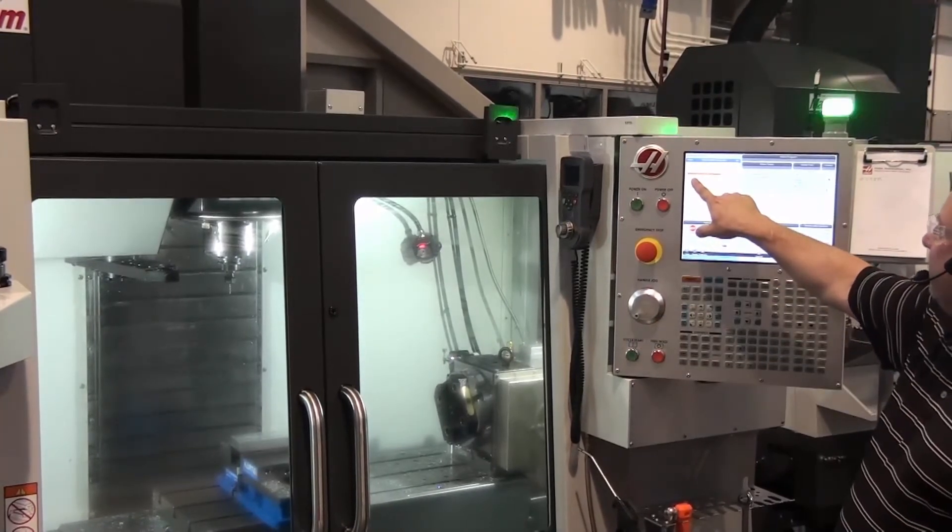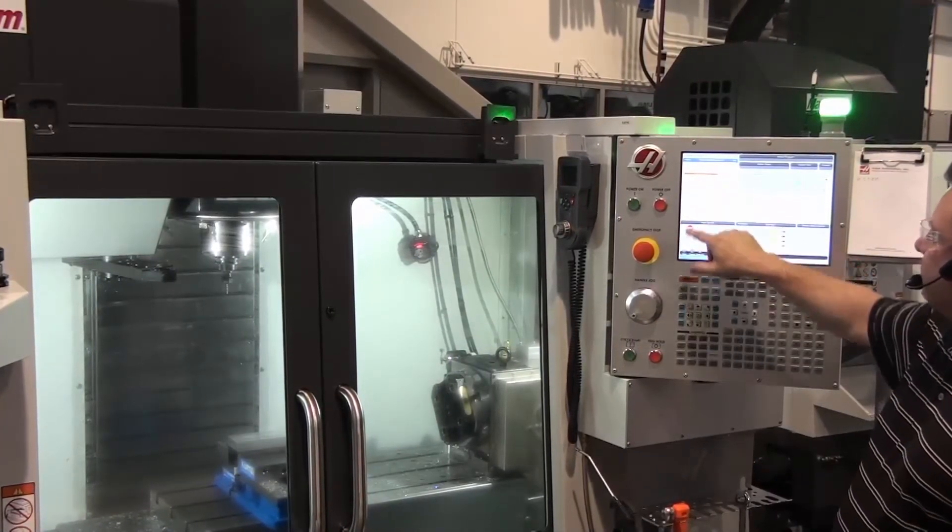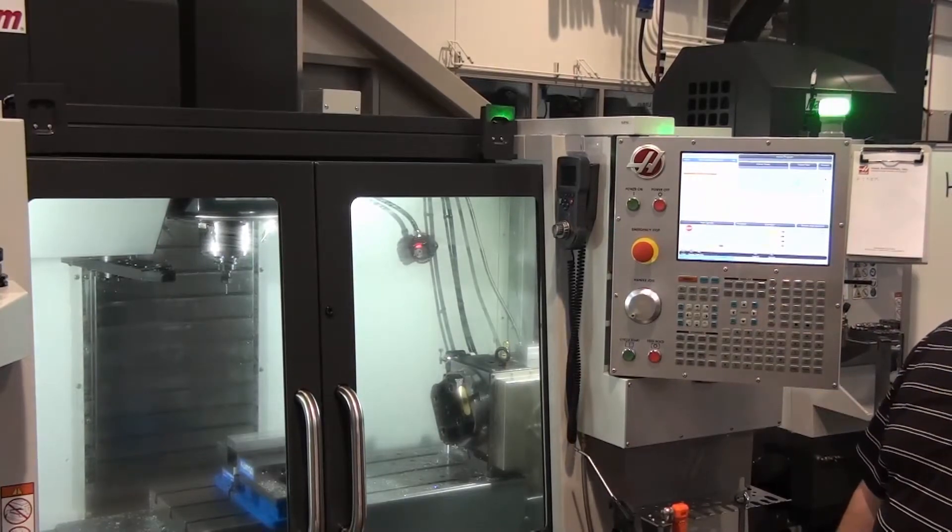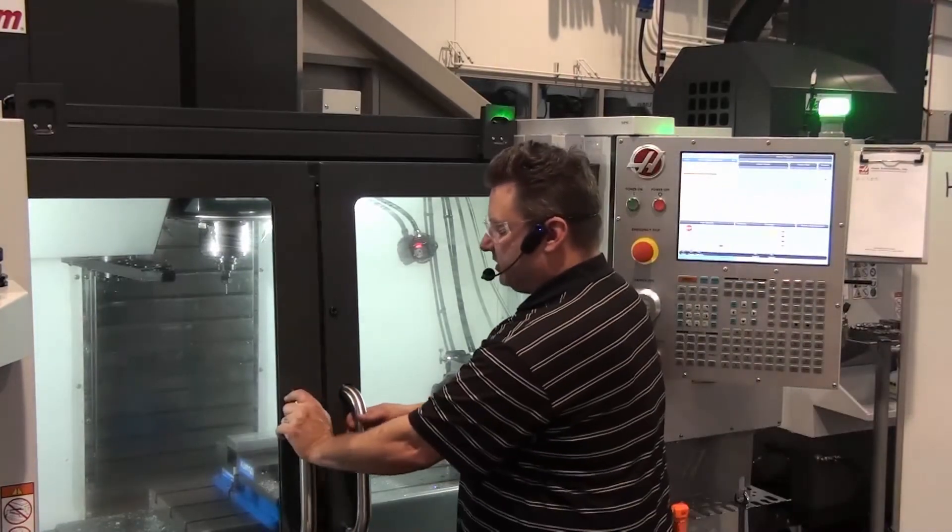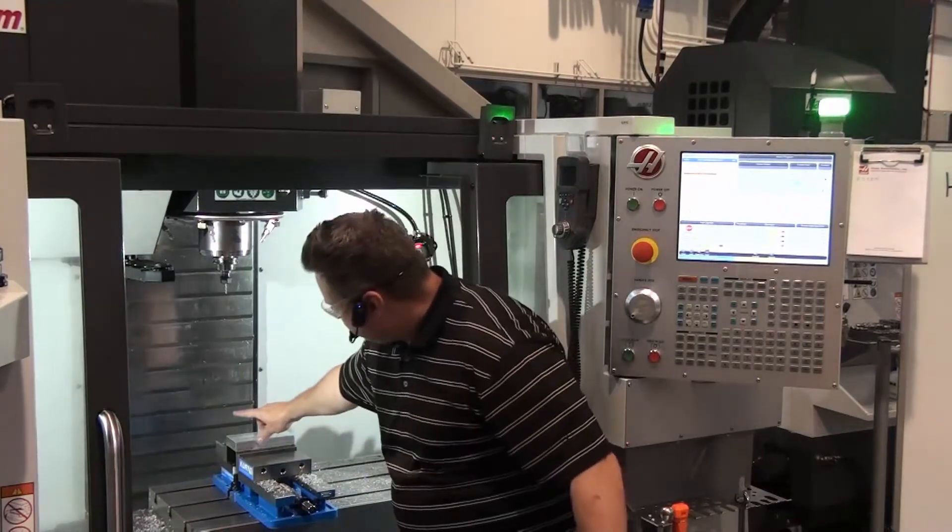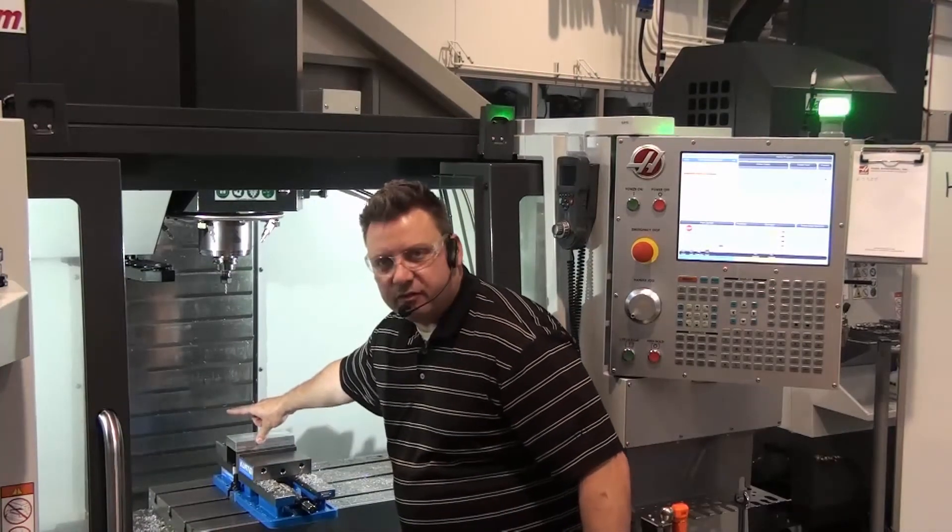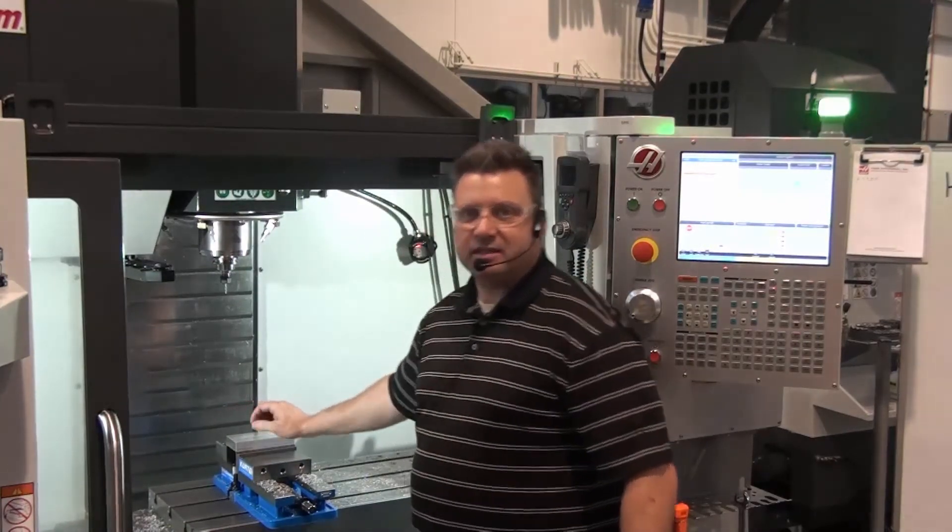My next movement is a height reference. I'm going to move about two inches above the top of the part. So when I'm done with this line of code, my tool should be about this far above the part. If it's not, I've either set up my tool incorrectly or I've programmed it incorrectly.